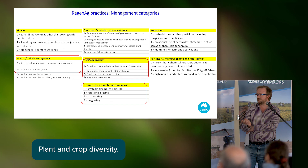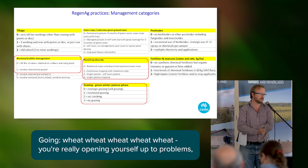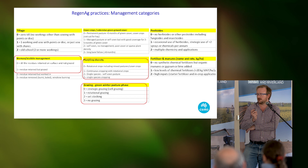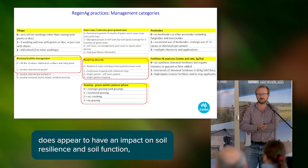Plant and crop diversity - there are many reasons for this, disease being the greatest. Going wheat-wheat-wheat-wheat really opens you up to problems no matter how profitable it might appear in the first couple of years. Rotational diversity appears to have a real impact on soil resilience and soil function, and it's definitely something that should be looked at more. With that, thank you for putting up with a very poor second-grade attempt at being Gupta.